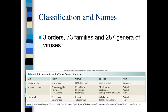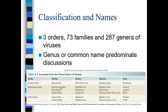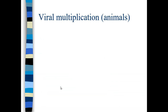To look at how we classify viruses, there are three orders, 73 families, and 287 genera of viruses. Mostly we talk about the genus or common name — for measles virus we just call it measles virus, not morbillivirus. For tobacco mosaic virus, which infects plants, we call it tobacco mosaic virus, not Tobamovirus. You don't need to know the different orders of viruses — this table doesn't explain the differences between orders, so don't worry about memorizing those.